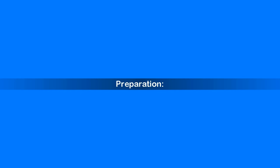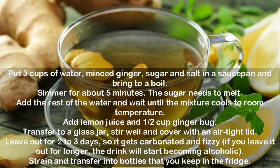Preparation: Put 3 cups of water, minced ginger, sugar, and salt in a saucepan and bring to a boil. Simmer for about 5 minutes until the sugar melts. Add the rest of the water and wait until the mixture cools to room temperature. Add lemon juice and 1 and a half cups of ginger bug. Transfer to a glass jar, stir well, and cover with an airtight lid. Leave out for 2 to 3 days so it gets carbonated and fizzy.